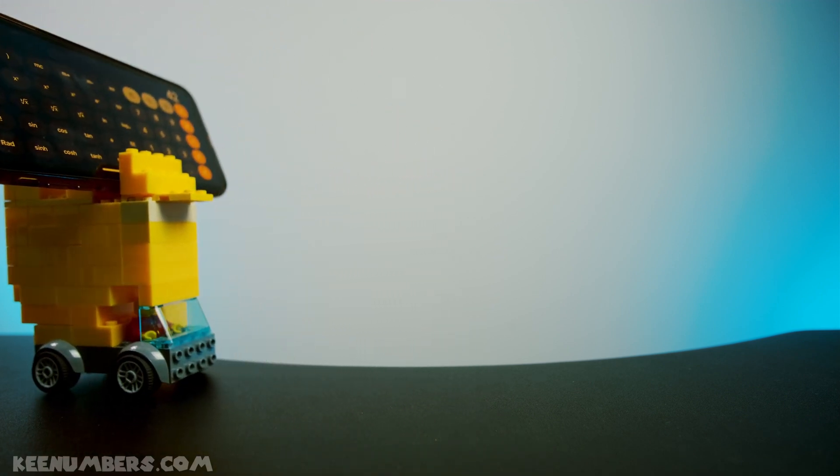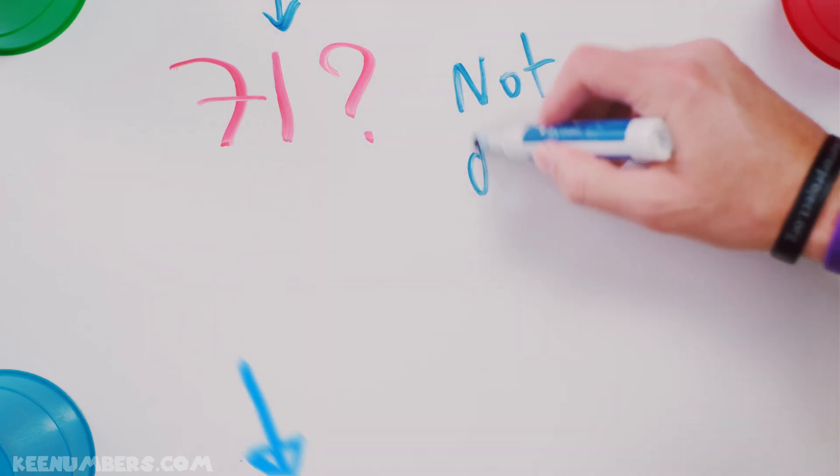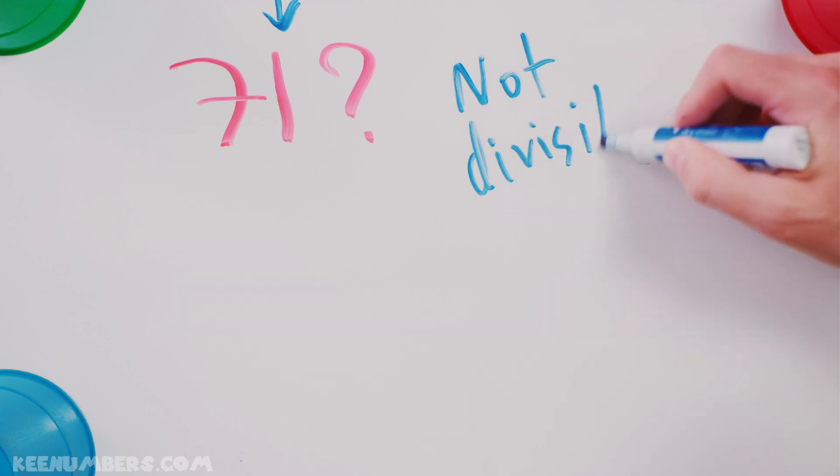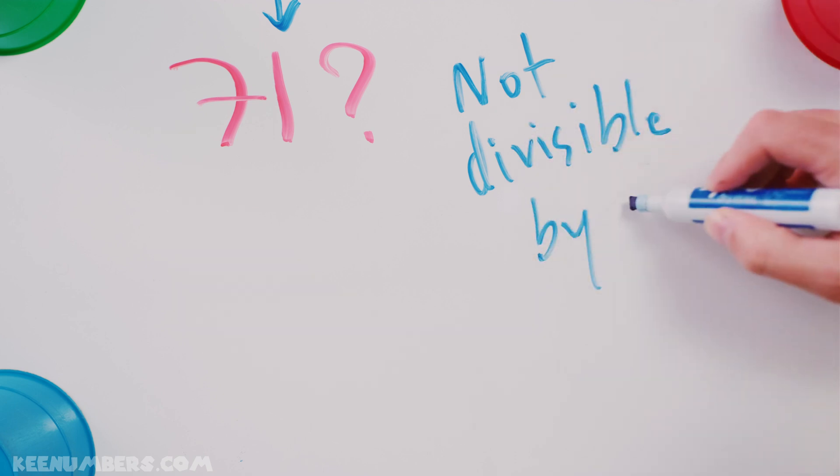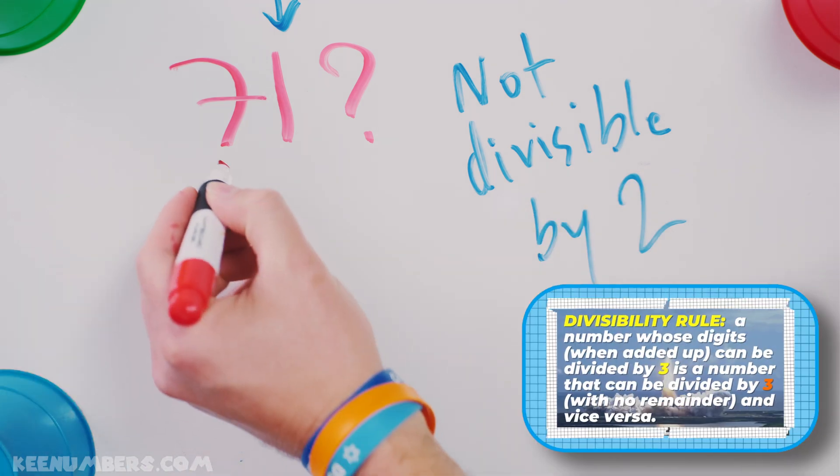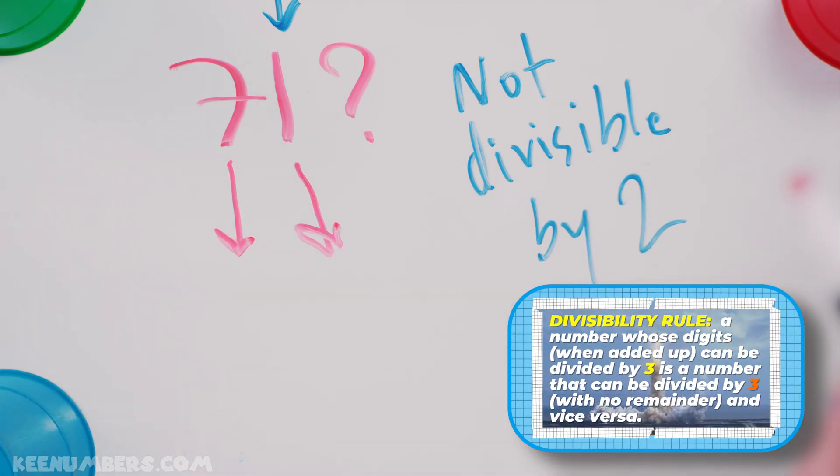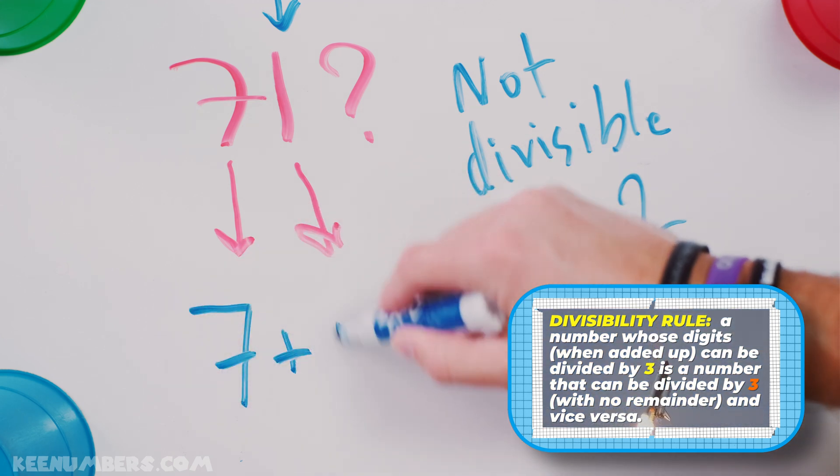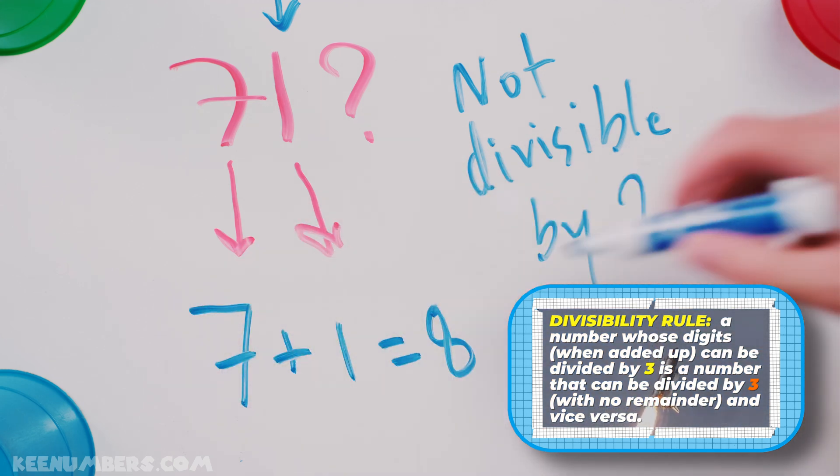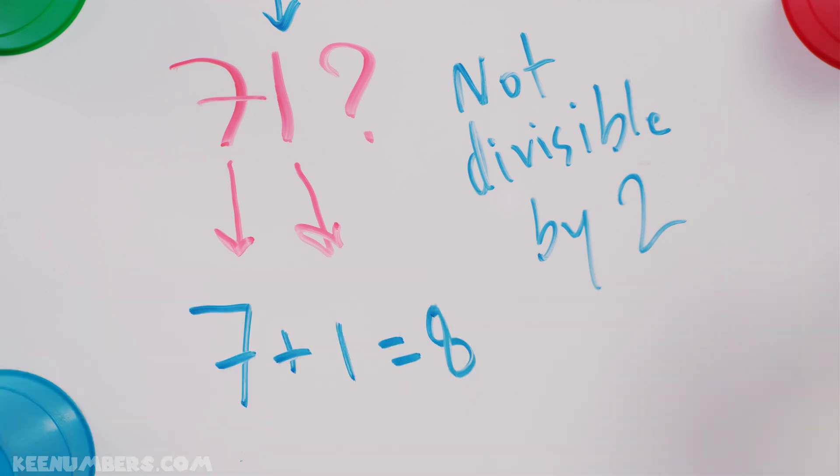What about 71? It's not even, so not divisible by 2. And when you add up the digits here, you're going to get 7 plus 1, which is 8. And that's not divisible by 3. So it is not divisible by 2. It is not divisible by 3.